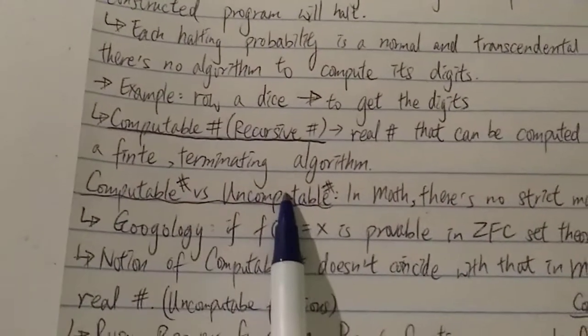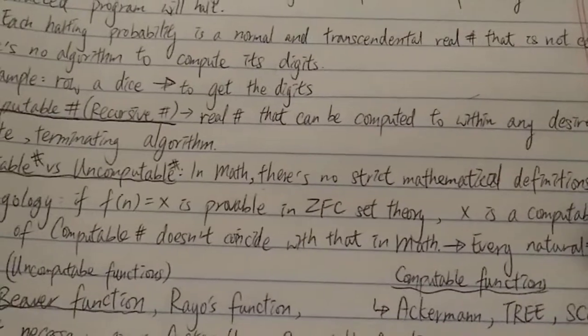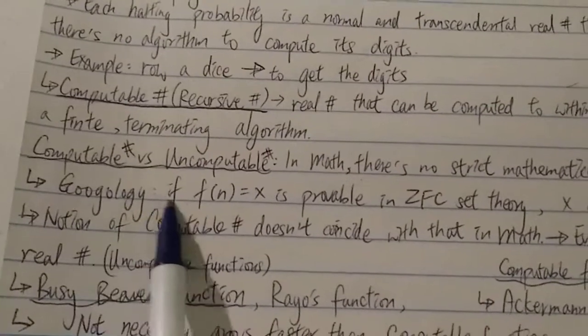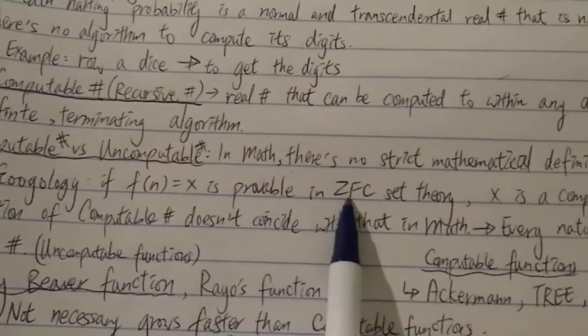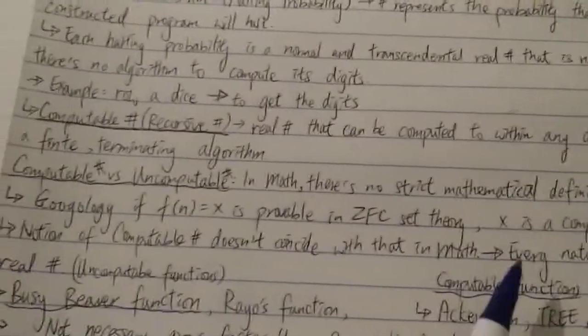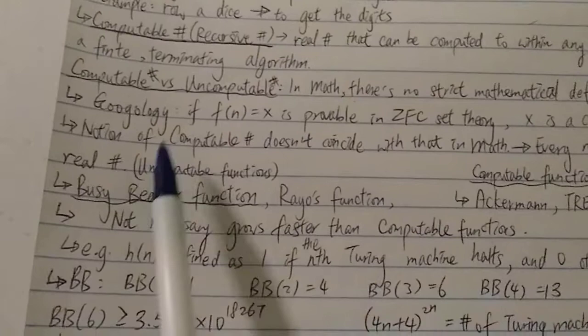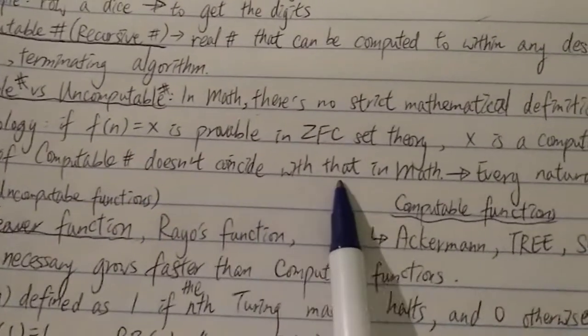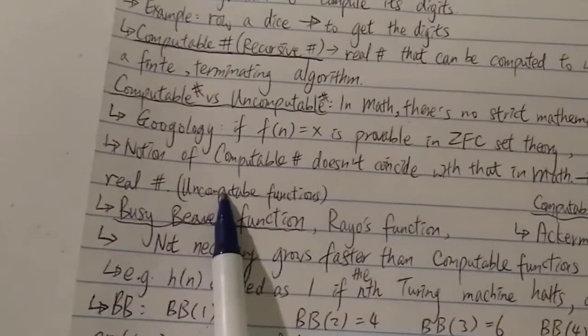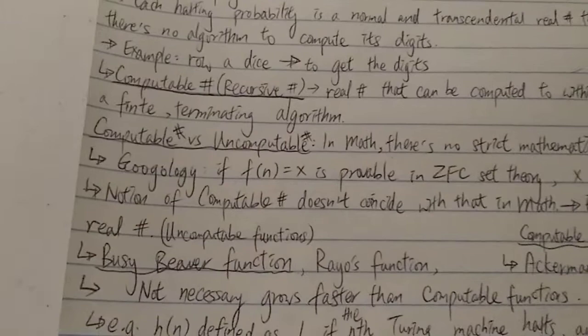For these two terms, computable versus uncomputable number, in mathematics there's no strict mathematical definition actually. So that's why there's a lot of confusion and argument. Basically in terms of googology, if f(n) = x is provable in the ZFC set theory, then x is a computable number. Otherwise it's not a computable number. If it's unprovable, it's uncomputable. The notion of computable number does not coincide with that in mathematics. In mathematics, every natural number is a computable real number, but this is not necessarily the case in googology or computer science.